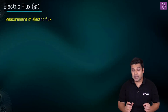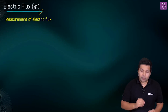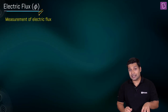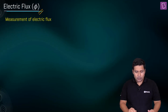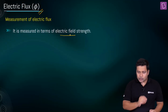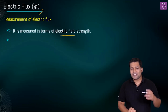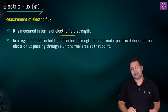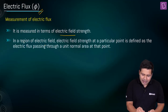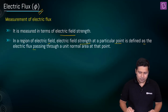The first thing to remember is that electric flux is denoted by the symbol phi. It is measured in terms of electric field strength. In a region of electric field, the electric field strength at a particular point is defined as the electric flux passing through a unit normal area at that point.